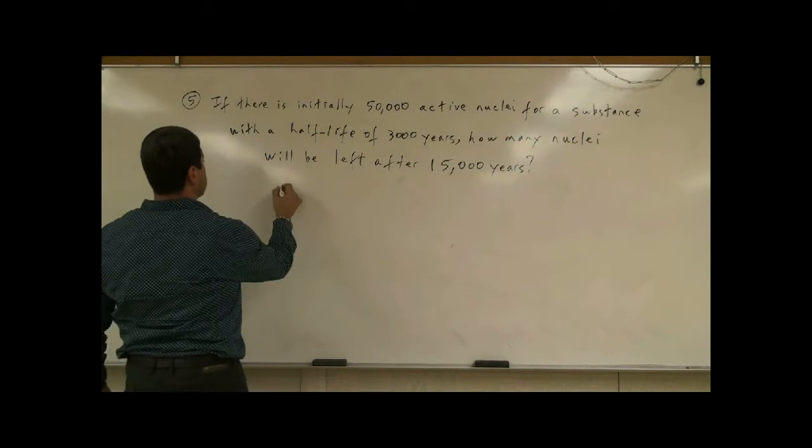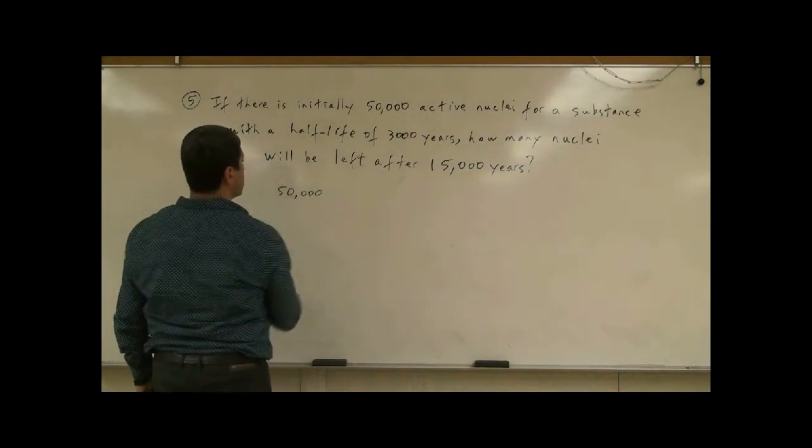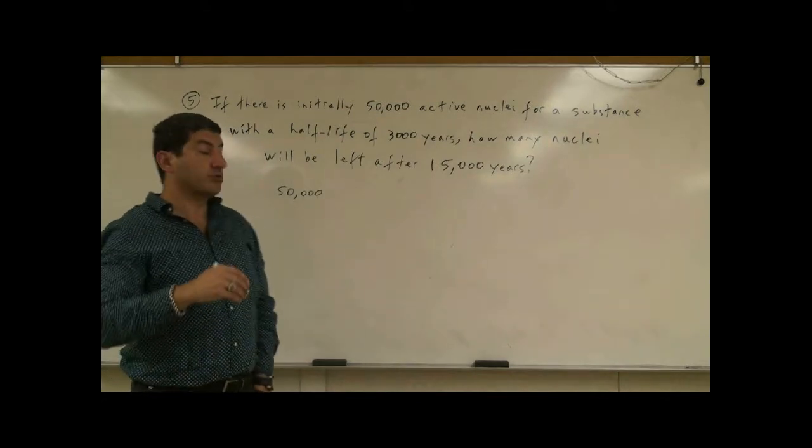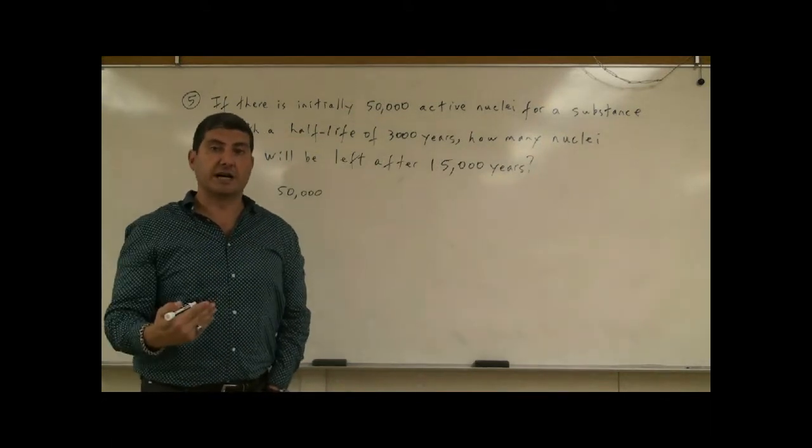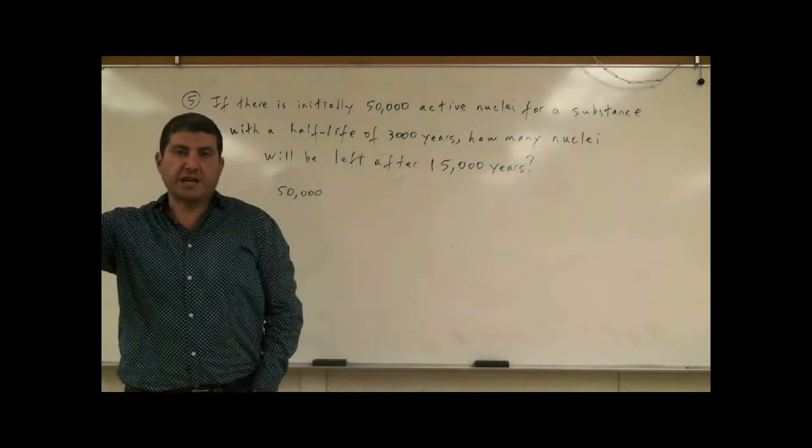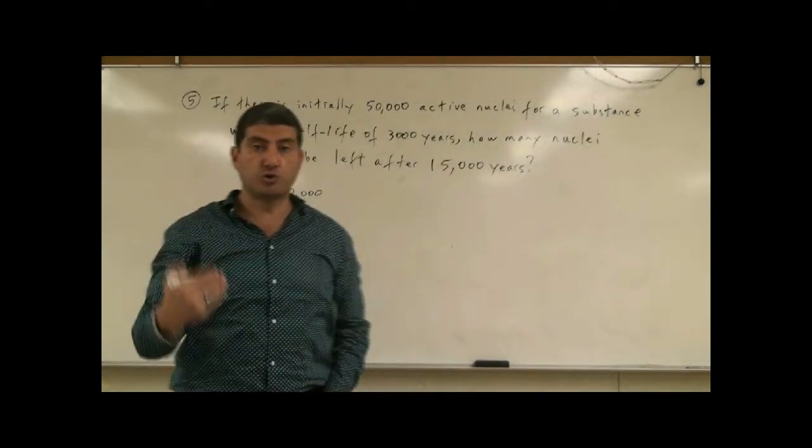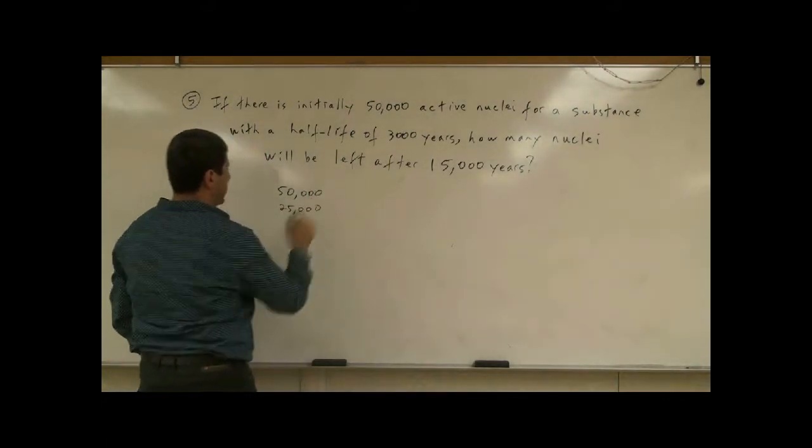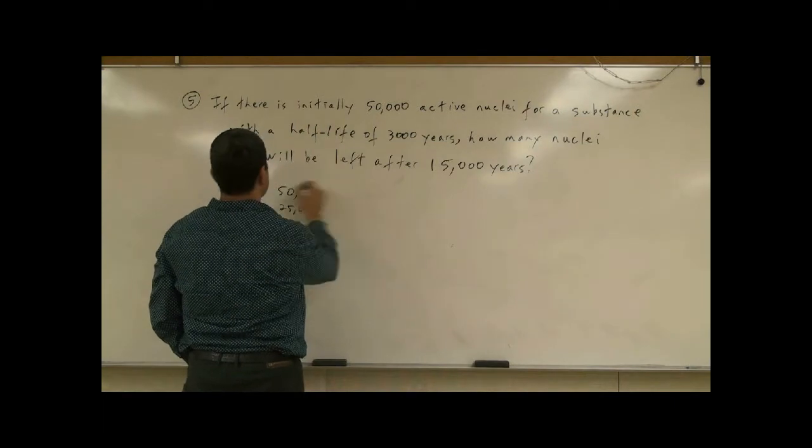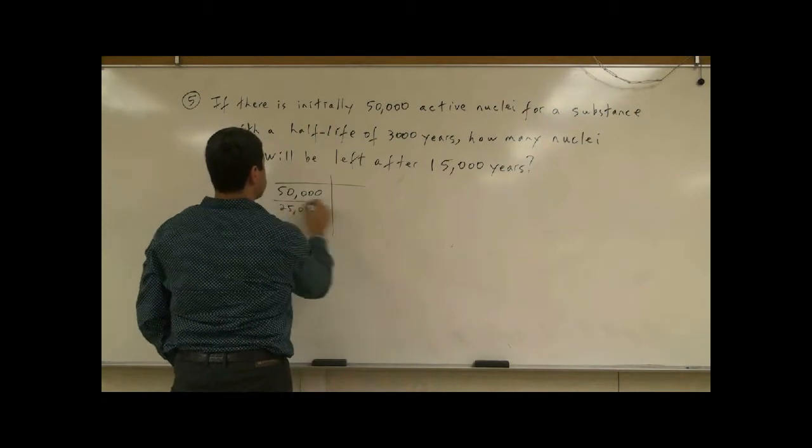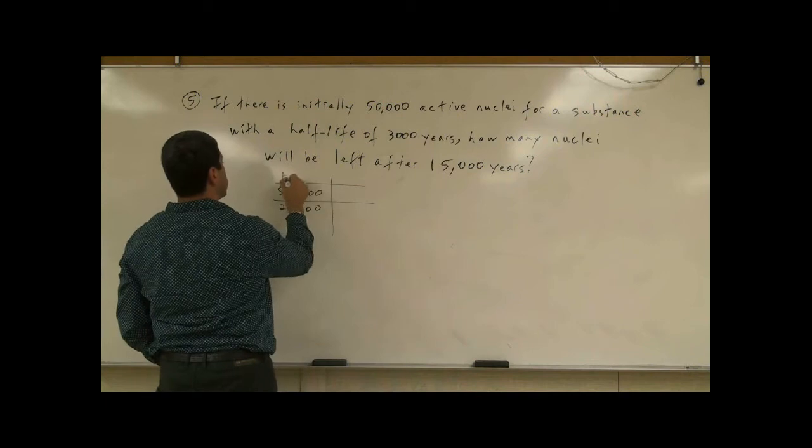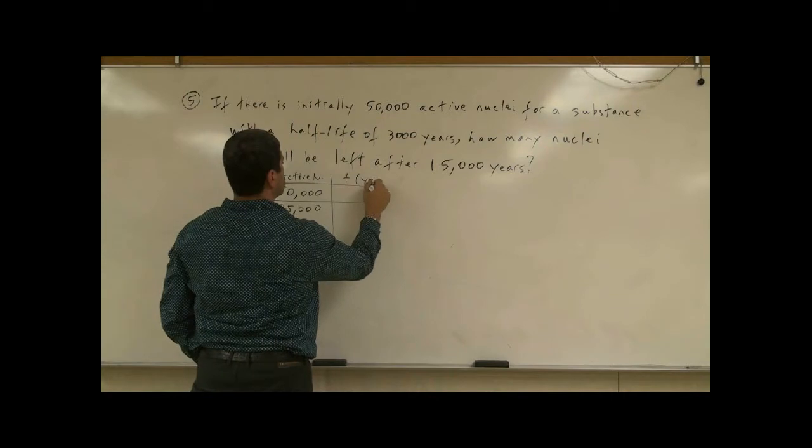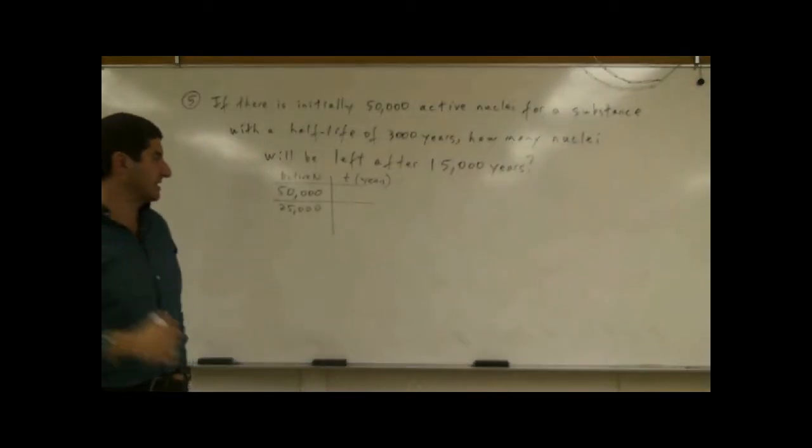So if the substance began with 50,000 active nuclei, what does it mean for the half-life to be 3,000 years? Well, after 3,000 years, half of it will be gone, half of it will have radiated away. There'll be half as many active nuclei. So 25,000, half of 50,000 is 25. We can kind of make a table here. This is active nuclei, and then this is T, the number of years.